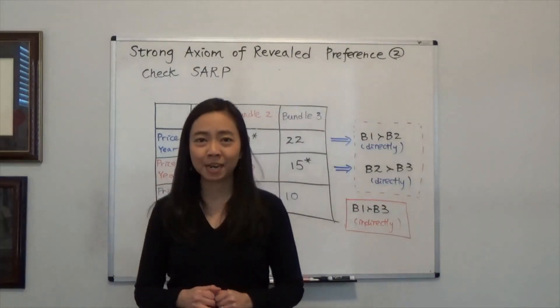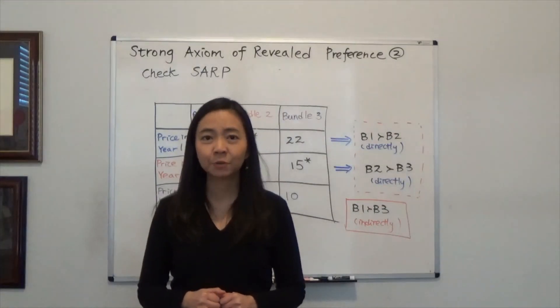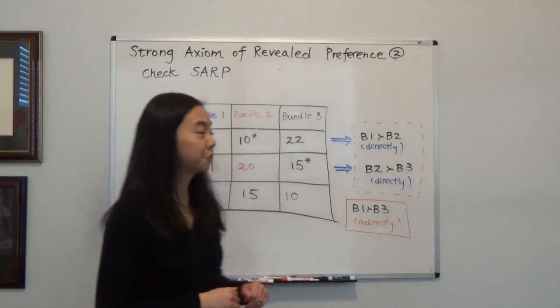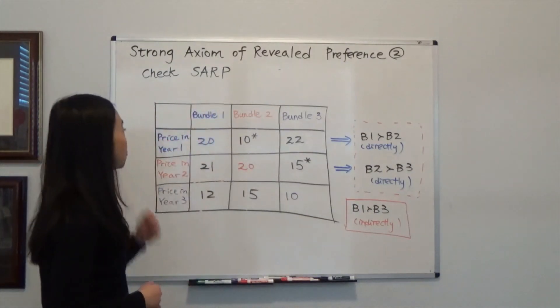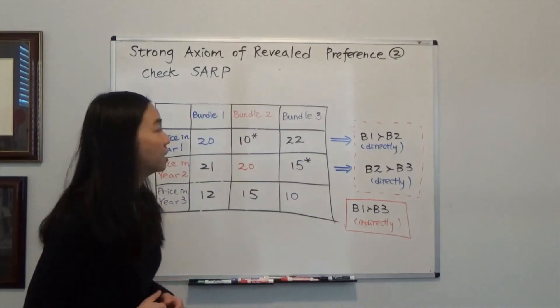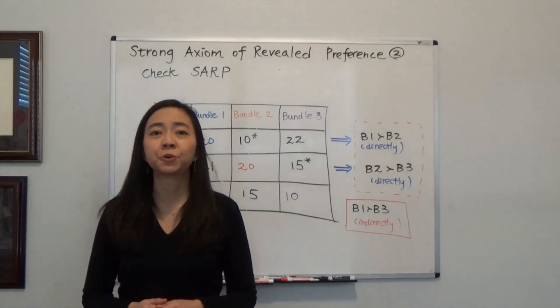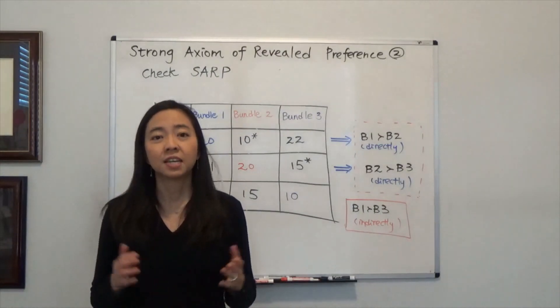Hello everyone, my name is Iris Trance. I'm going to talk about the strong axiom of revealed preference, also known as SARP.